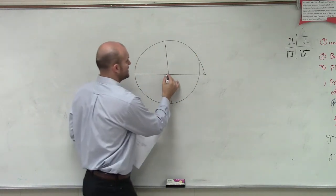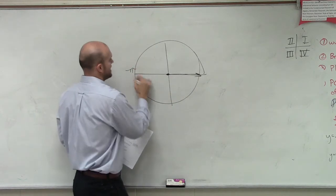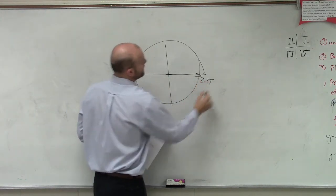Let's go back to my circle here. So we have our initial side. And I said that halfway around is pi, all the way around is 2 pi.